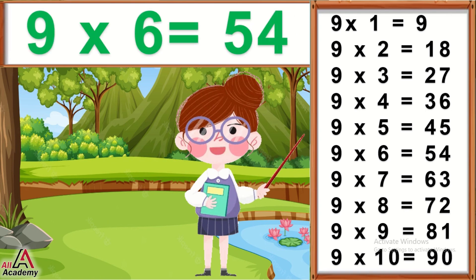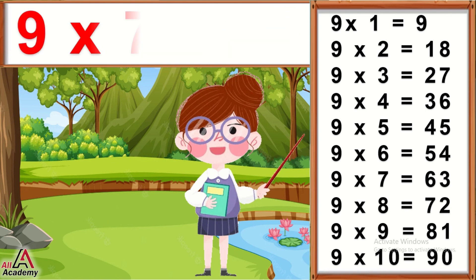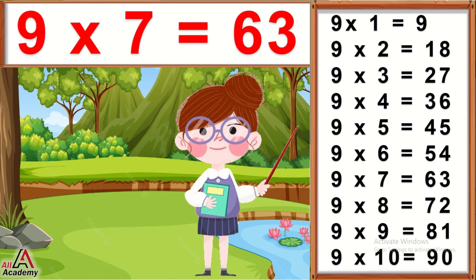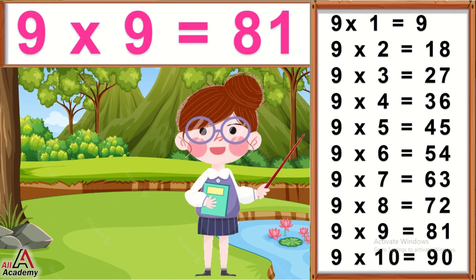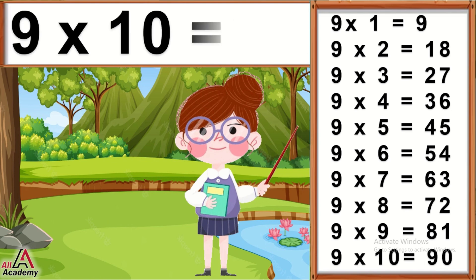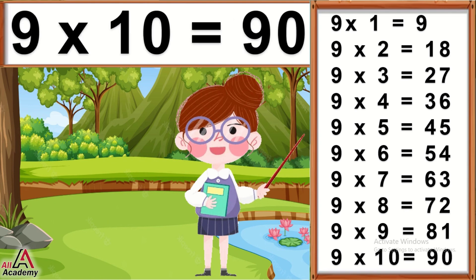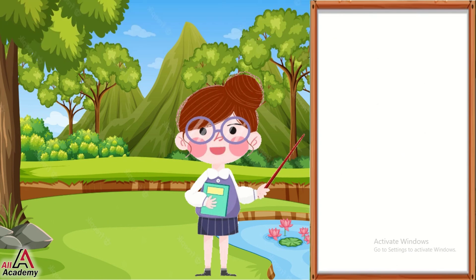9 sixes are 54. 9 sevens are 63. 9 eights are 72. 9 nines are 81. 9 tens are 90.